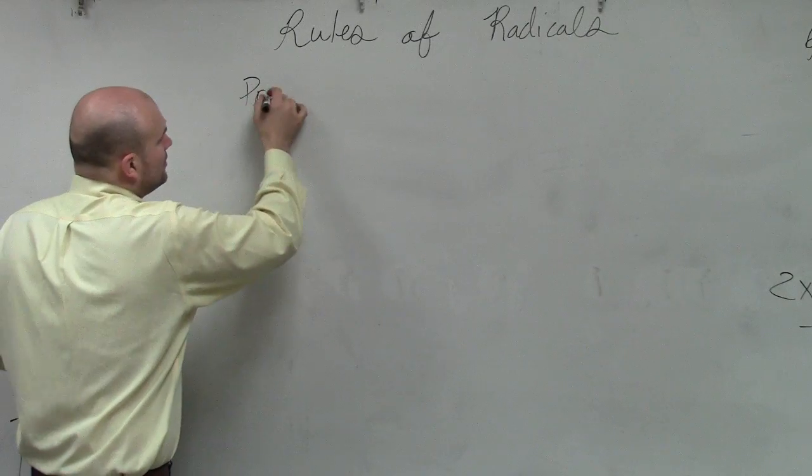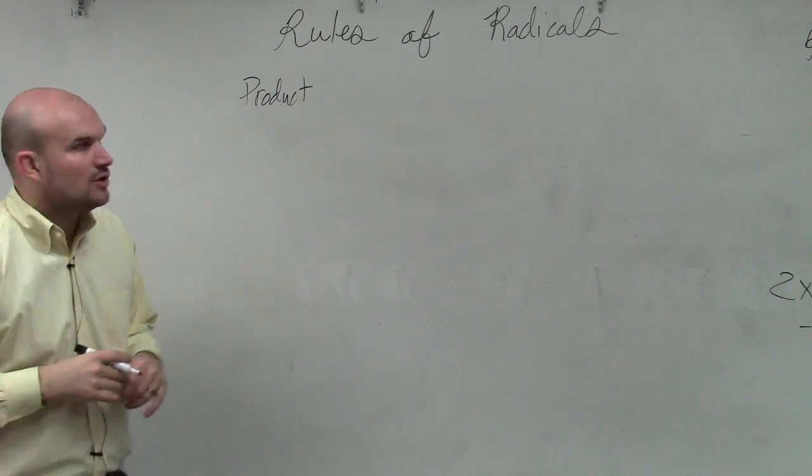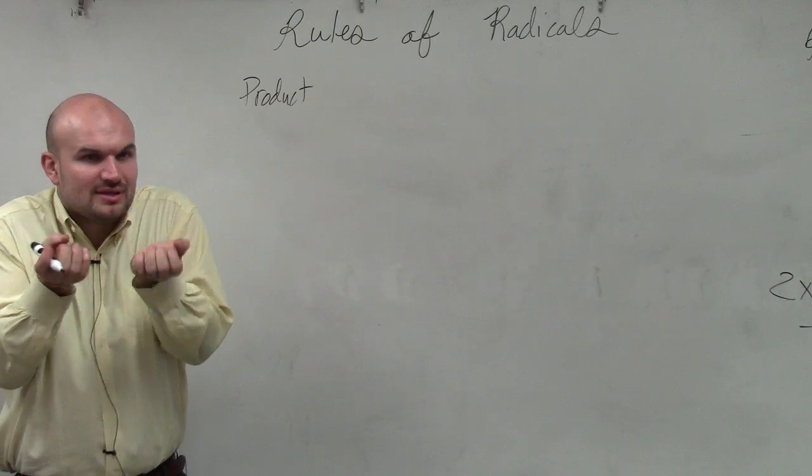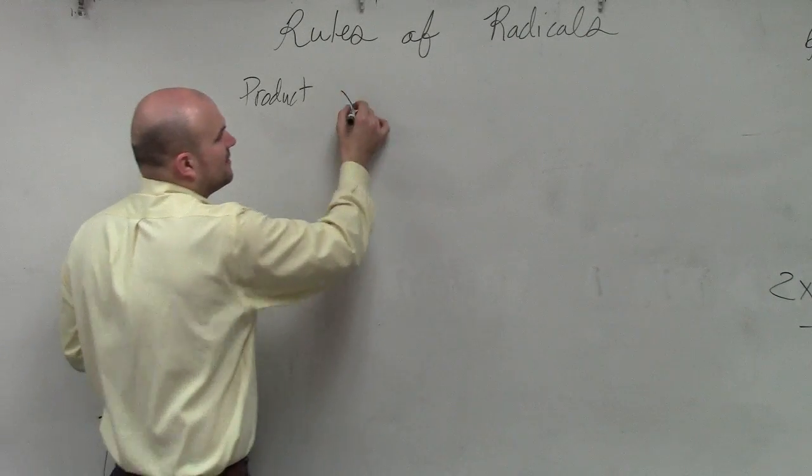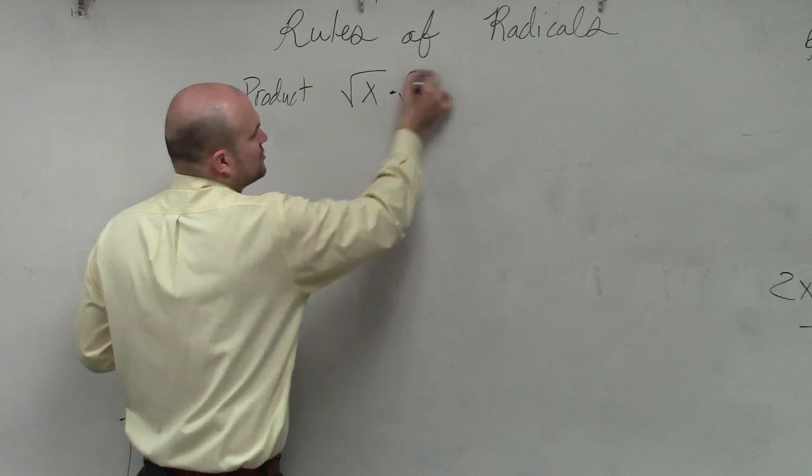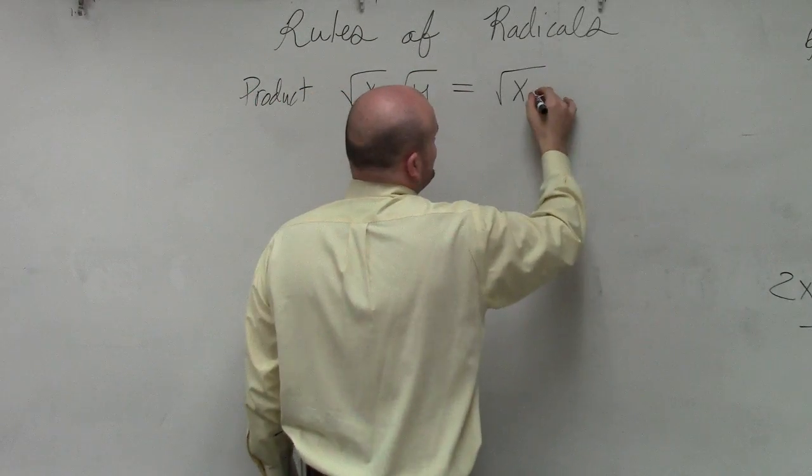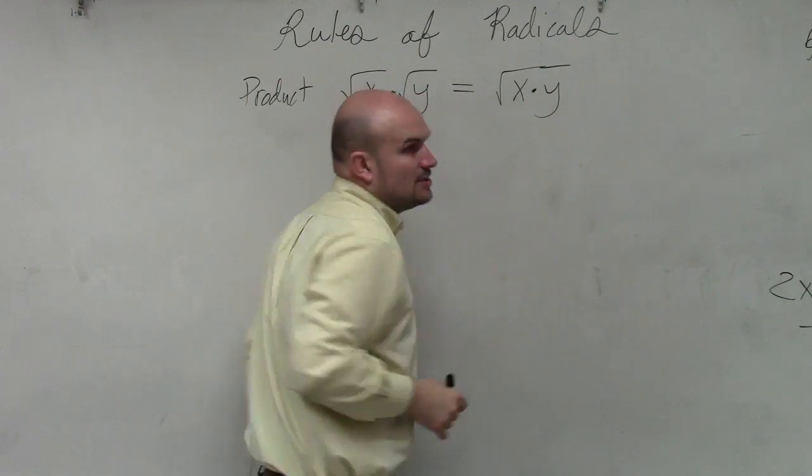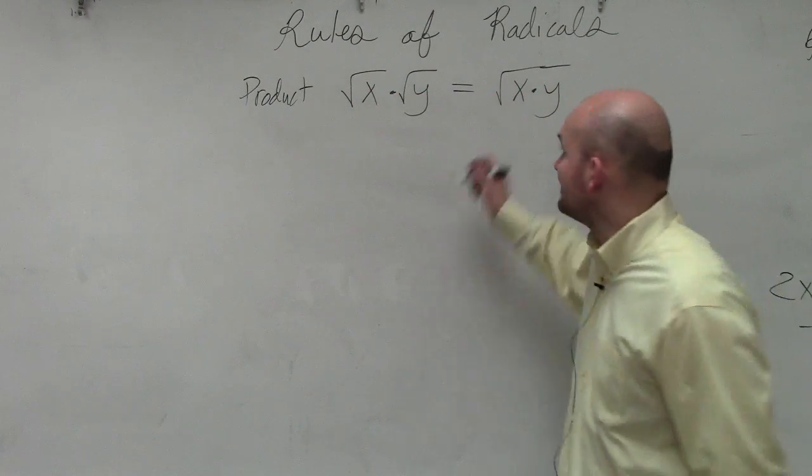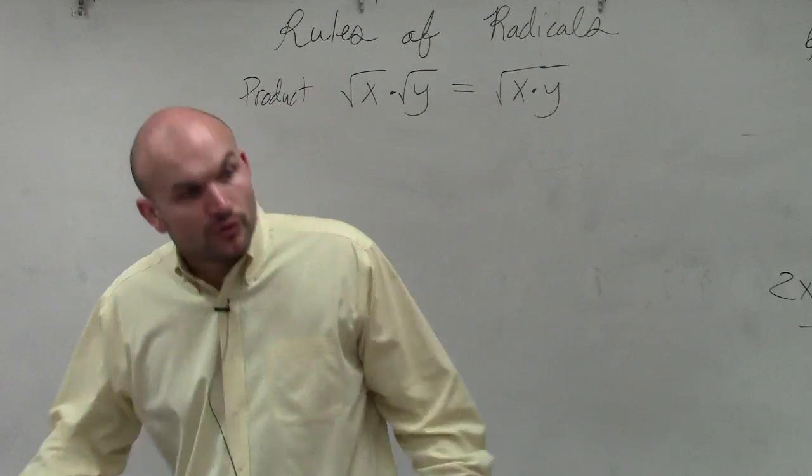For the product rule, the main important thing is if I have square root of x times the square root of y, I'm simply just going to multiply them. That's x times y. So when you have radicands, the main important thing is they both have to be the square root, though.